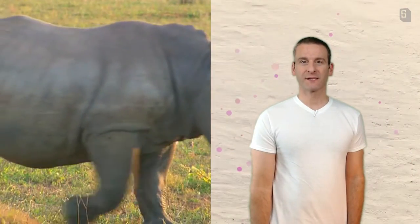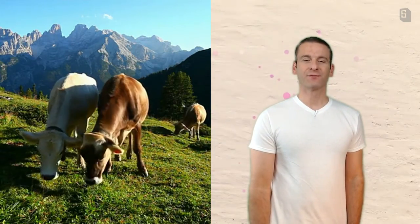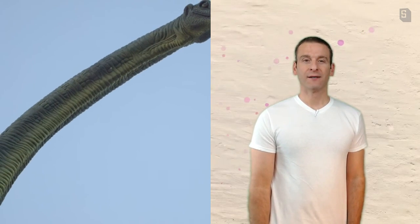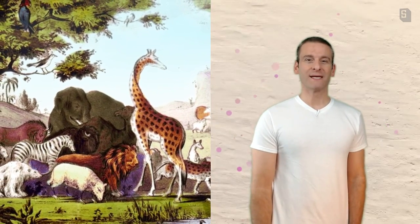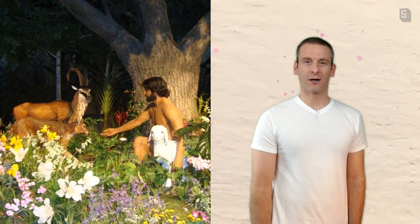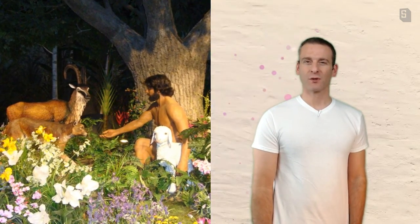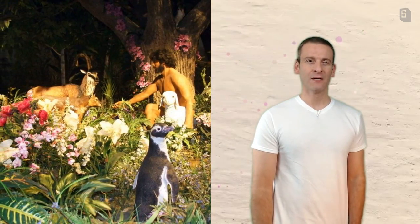On the sixth day Moses wrote for us that God created all the different kinds of creatures that live on the land. Then God said let us make man in our image after our likeness. We see something interesting here. Moses, as directed by the Holy Spirit, wrote that God was speaking to himself by using the words us and our. Was Moses recording the first instance, 26 verses from the very beginning of the Bible, of the Trinity?